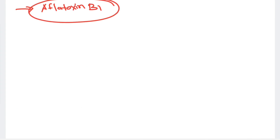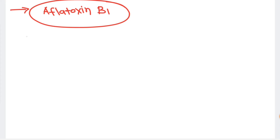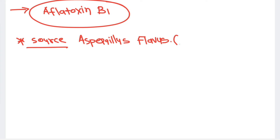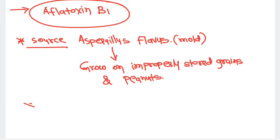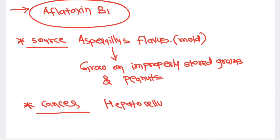Aflatoxin B1 comes from the fungus Aspergillus flavus, which is a mold. This fungus grows on improperly stored grains and peanuts when storage conditions are inadequate and moisture is present. Aflatoxin B1 most commonly leads to hepatocellular carcinoma, which is the main danger of aflatoxin.